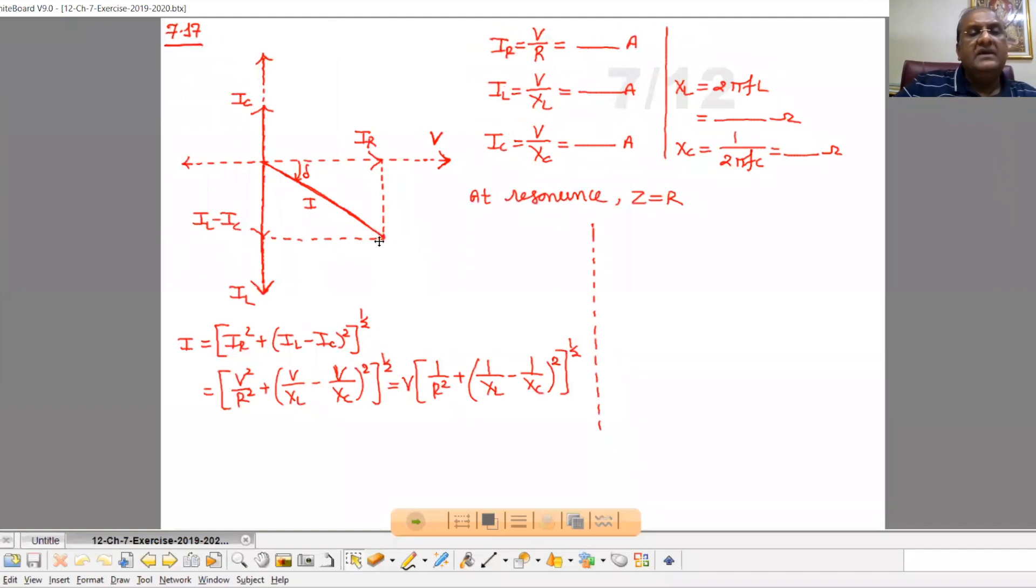Now let's prepare the phasor diagram. This is the parallel combination of L, C, and R. In parallel combination, the potential drop across each element will be the same, but the current will be different for each element.